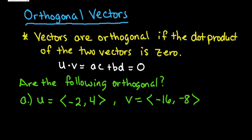For this video, I want to discuss orthogonal vectors. Two vectors are orthogonal if the dot product of the two vectors is equal to zero.